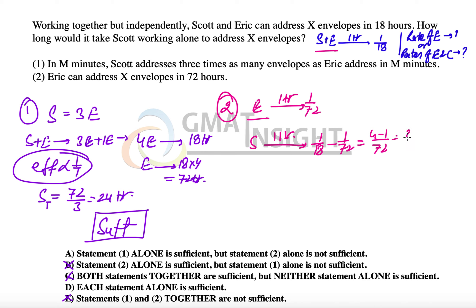This becomes 4 minus 1, or 3 over 72, which equals 1/24. This means Scott takes 24 hours to address x envelopes. So once again, the second statement alone is sufficient.